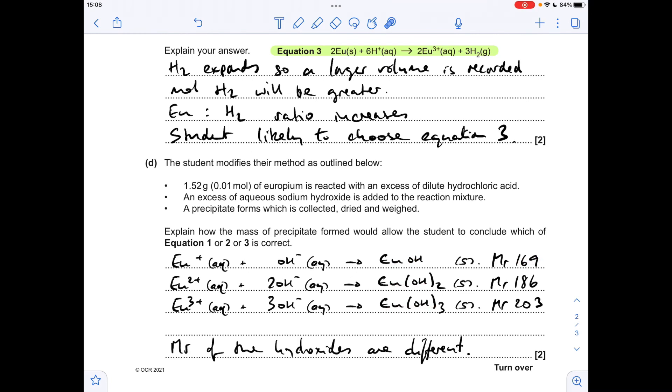So using the MR, moles times MR, you can calculate the mass expected of the hydroxide precipitate. So if equation one was correct you should get that many grams of precipitate. Equation two, that many grams. Equation three, that many grams. So all I would say there is compare the mass of precipitate formed to the expected mass.